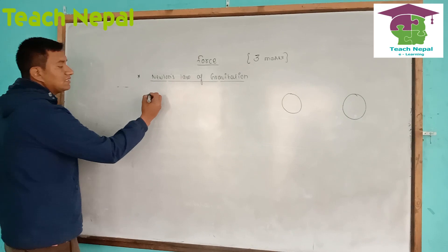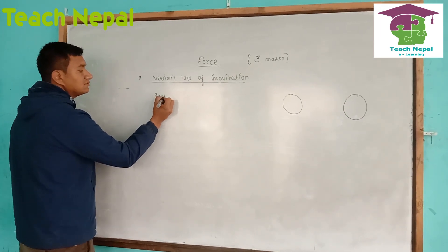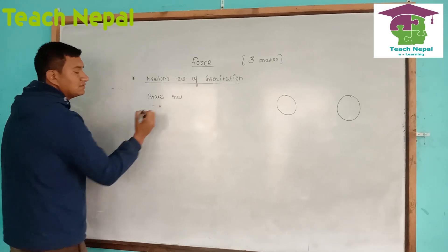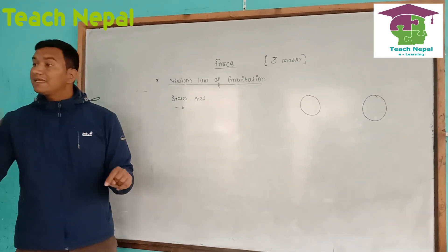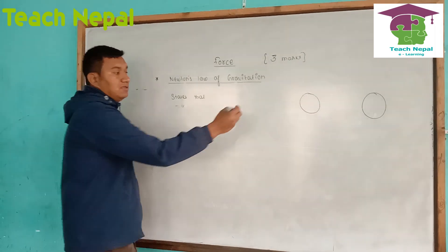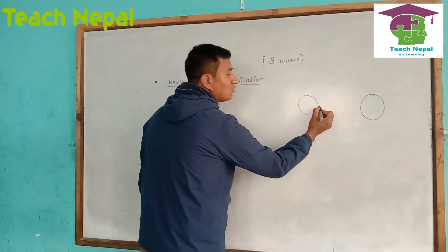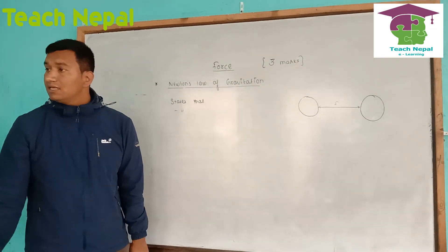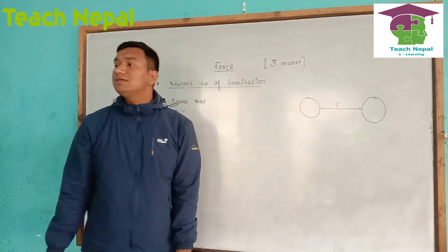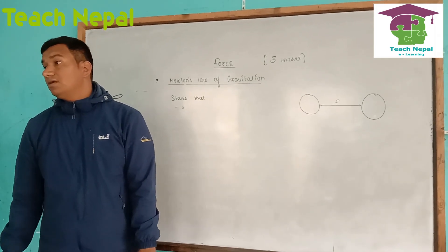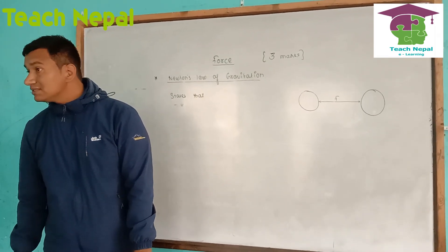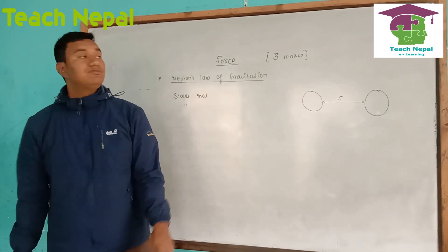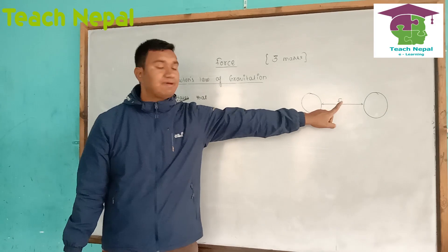Newton's Law of Gravitation states that it quantifies the force. That means there are two objects, and these two objects attract each other with a force. This force of attraction depends upon two factors: the mass of these objects, and the distance between them.